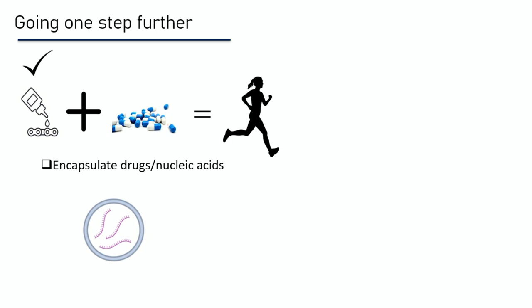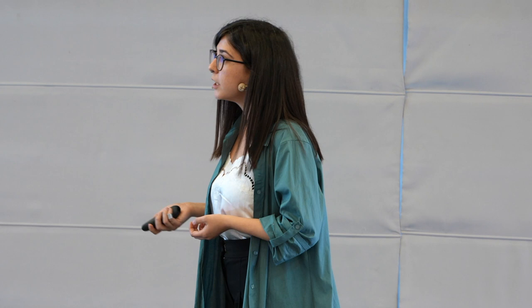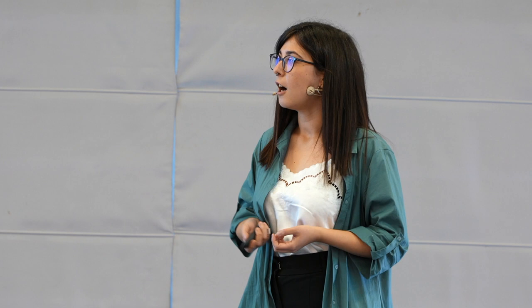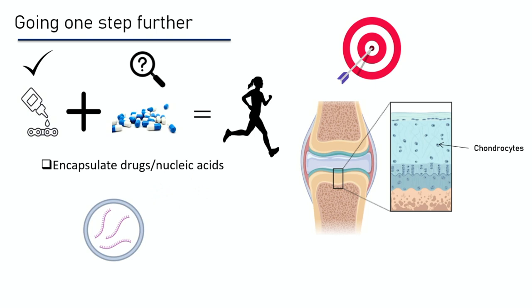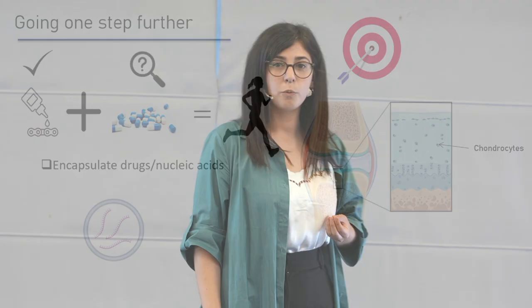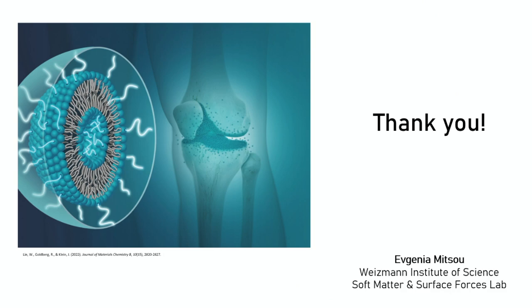After that, it's time to think big. Having our lubricating system, we now want to go to the drug delivery part. Our goal is to encapsulate drugs and different molecules inside our liposomes in order to target the cartilage itself. In the cartilage, there are some cells that, in case of osteoarthritis, produce bad molecules that destroy the cartilage. We want to target those and stop the production of those bad molecules. Hopefully we will stop osteoarthritis and have a two-in-one product: extremely good lubrication and a drug delivery system that stops the progression of osteoarthritis, making the lives of millions easier. Thank you very much.